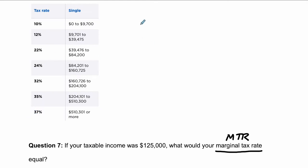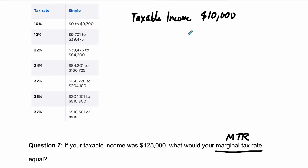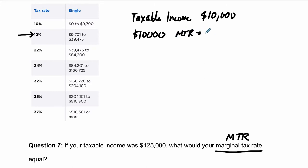What am I talking about? Let's say that your taxable income — this is the income that you're going to pay taxes on — let's keep it simple and say it's $10,000. What do you pay in taxes? If I look at my tax table right here, that means my marginal tax rate is 12%, because that $10,000 is between these two numbers here. So for $10,000, the MTR is 12%.